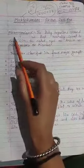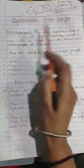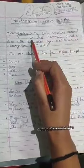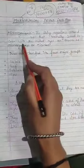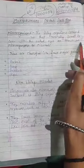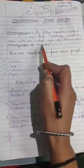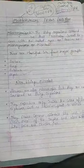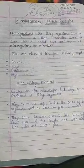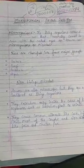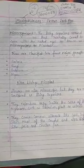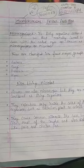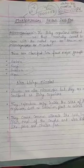The living organisms around us that normally cannot be seen with the naked eye are known as microorganisms or microbes.